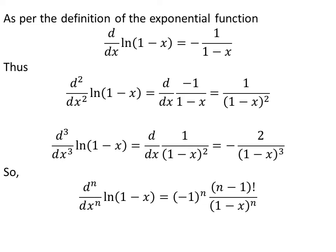The nth order derivative of natural log of 1 minus x is equal to minus 1 raised to the power of n, times factorial of (n minus 1), upon (1 minus x) raised to the power of n.